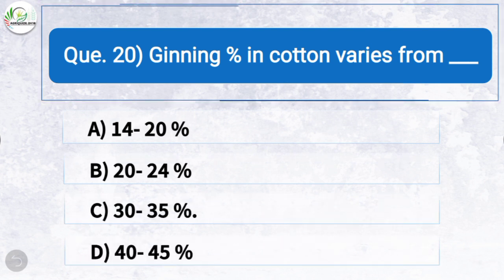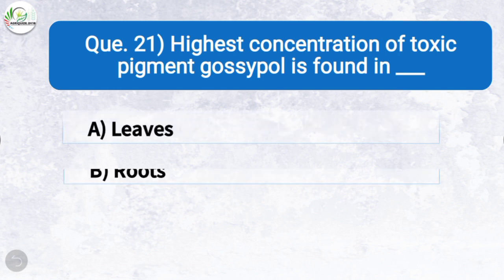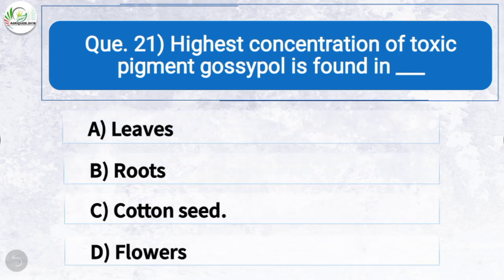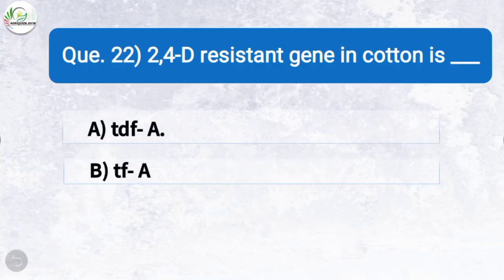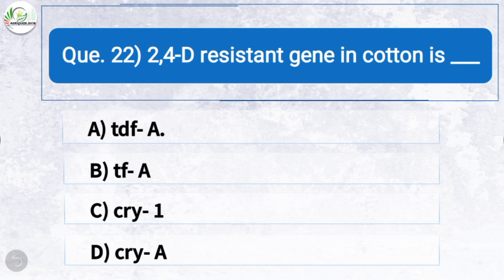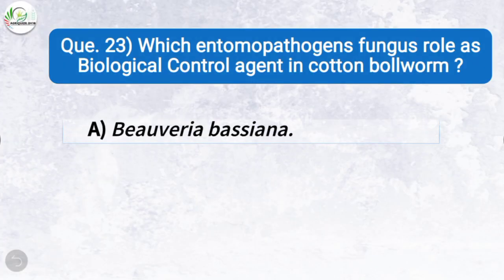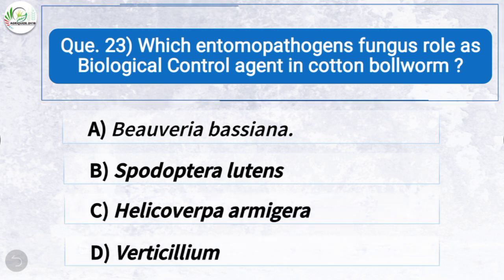Question twenty-one: Highest concentration of toxic pigment gossypol is found in — the correct answer is option C: cotton seed. Question twenty-two: 2,4-D resistant gene in cotton is — the correct answer is option A: TdfA. Question twenty-three: Which entomopathogenic fungus has the role of biological control agent in cotton ball worm? The correct answer is option A: Beauveria bassiana.